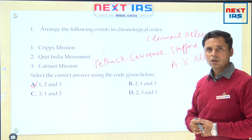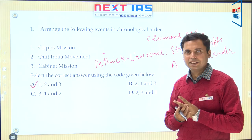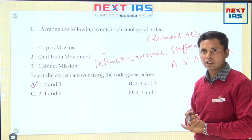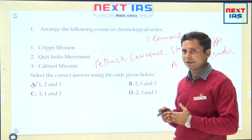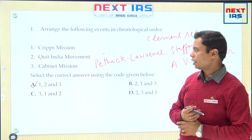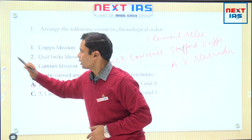The Cabinet Mission had arrived precisely for two reasons: one, to solve the question of Pakistan, and secondly to convert the contemporary Viceroy's Executive Council into an interim government. This is the sequencing of events, and the answer will be 1, 2 and 3 — so A is correct.